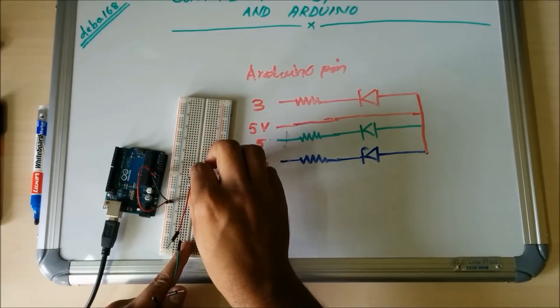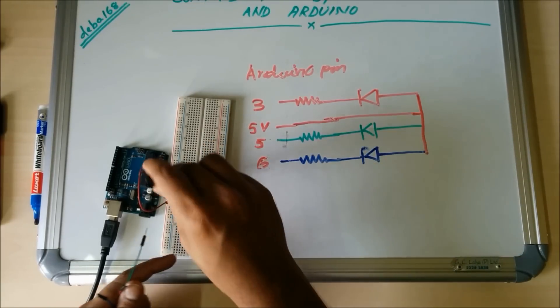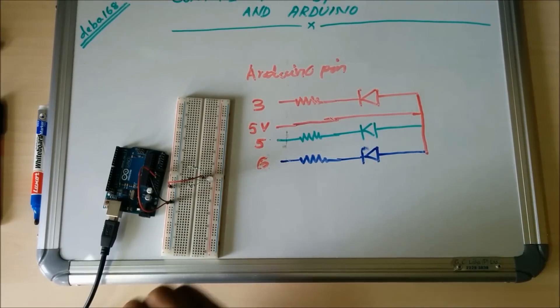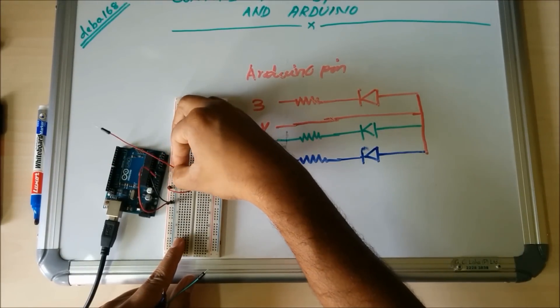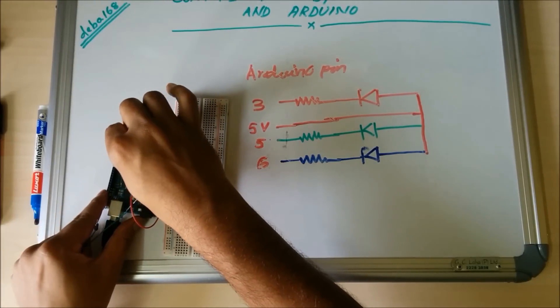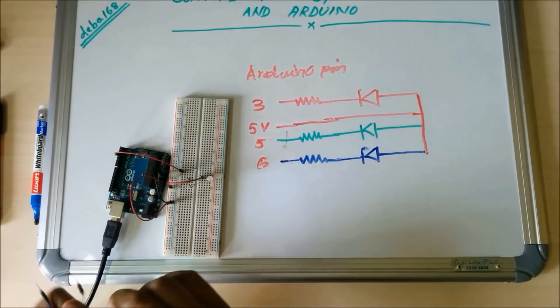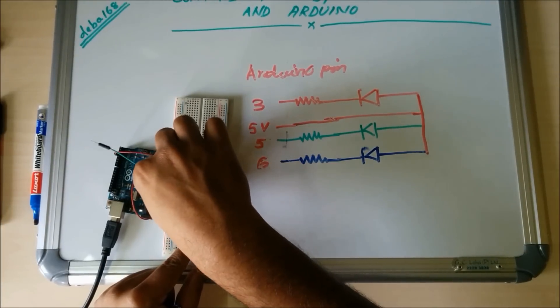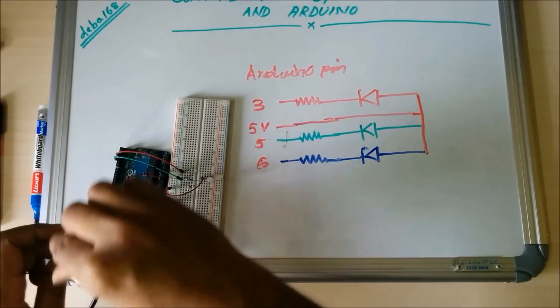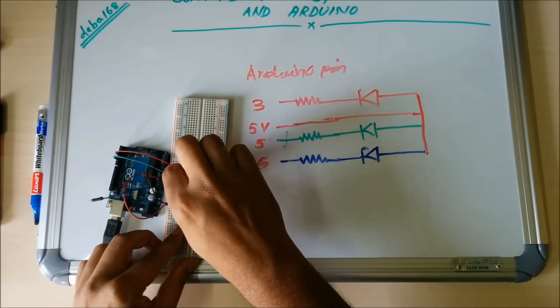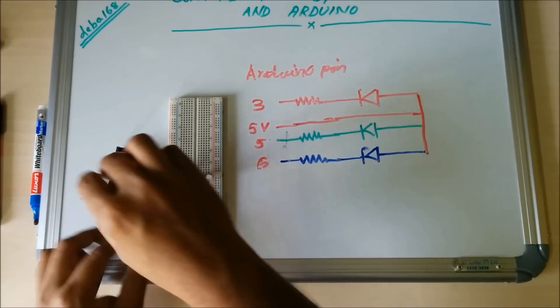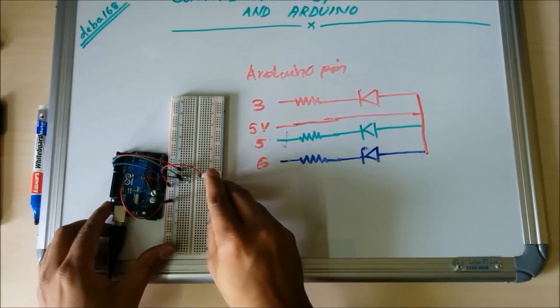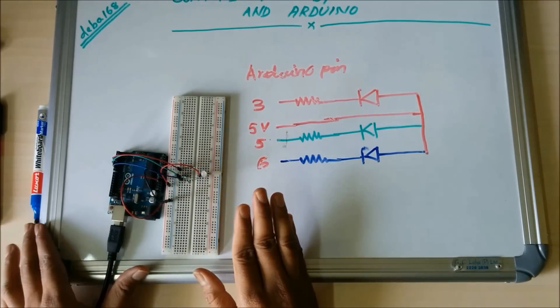Then connect the VCC pin of RGB to the red rail. Red LED pin should be connected to pin number 3, green LED pin should be connected to pin number 5, and the blue pin is connected to pin number 6. Now the RGB connection is complete.